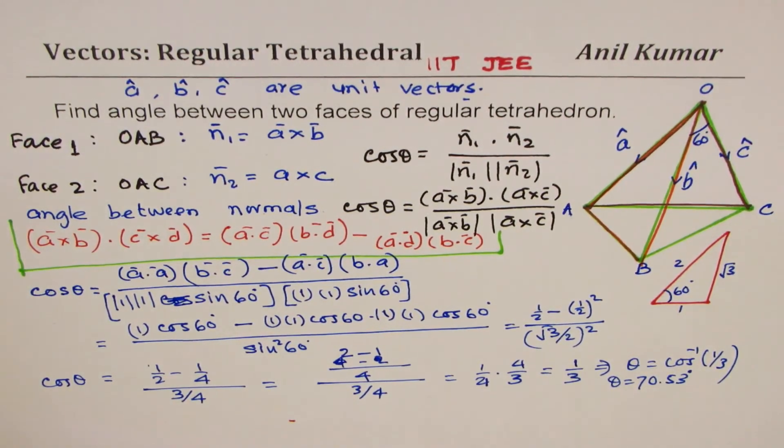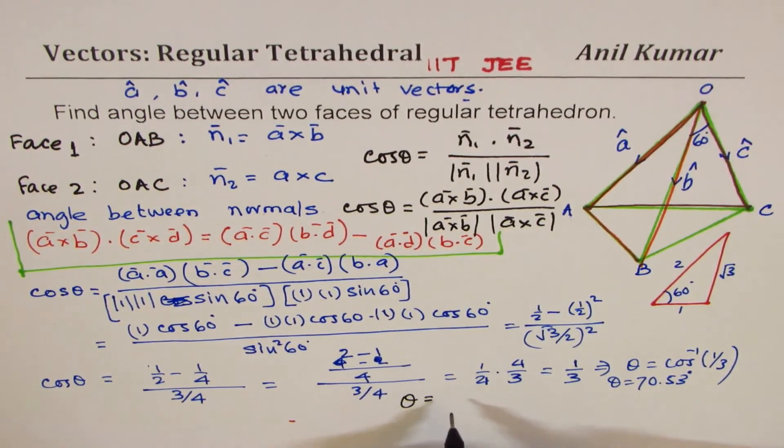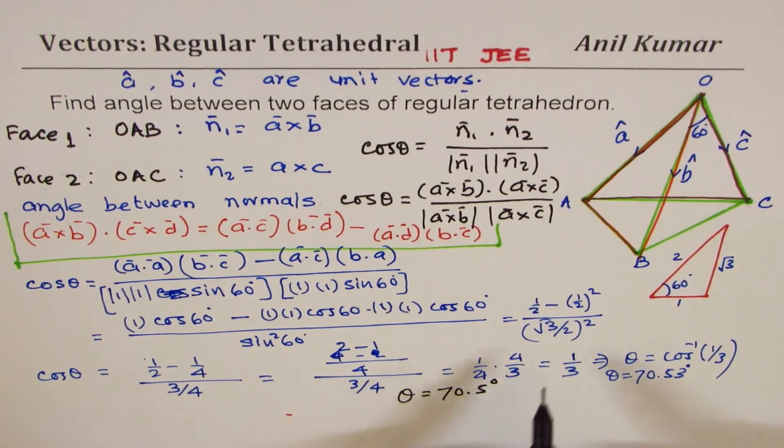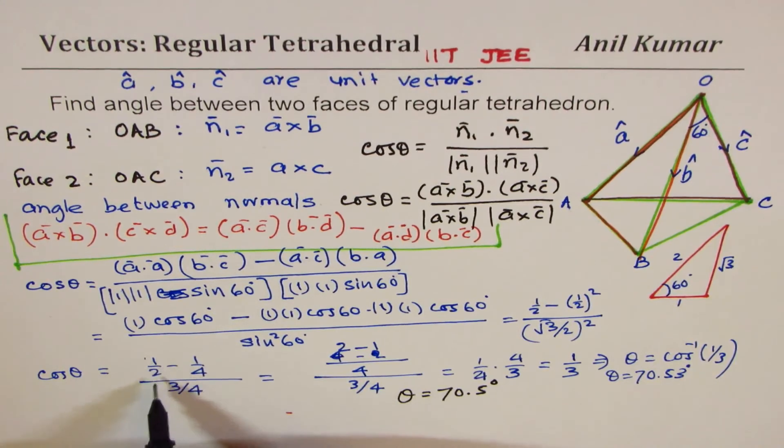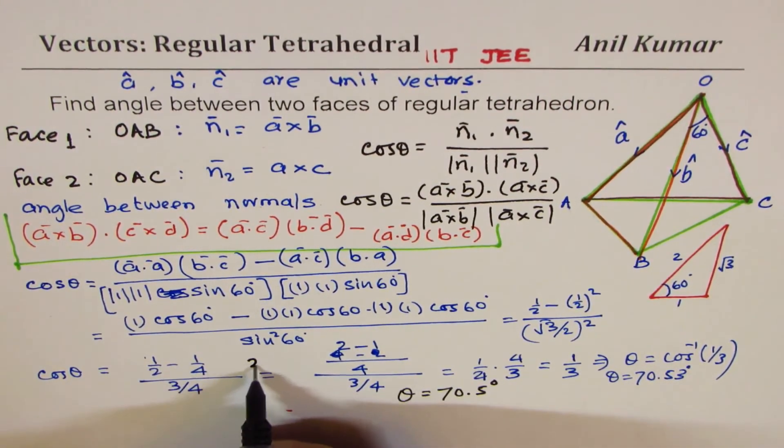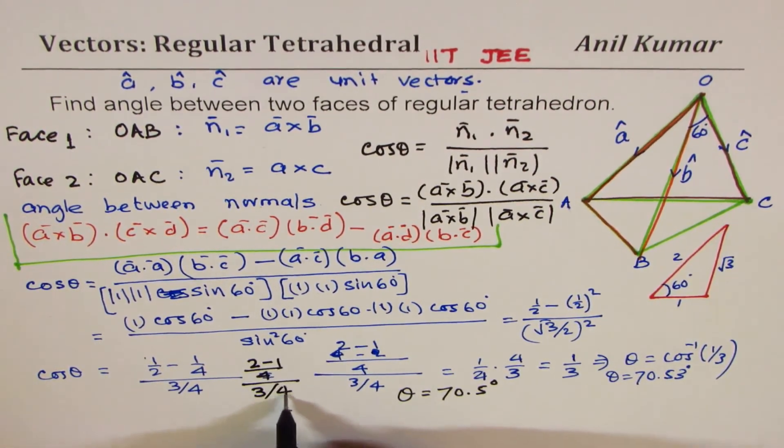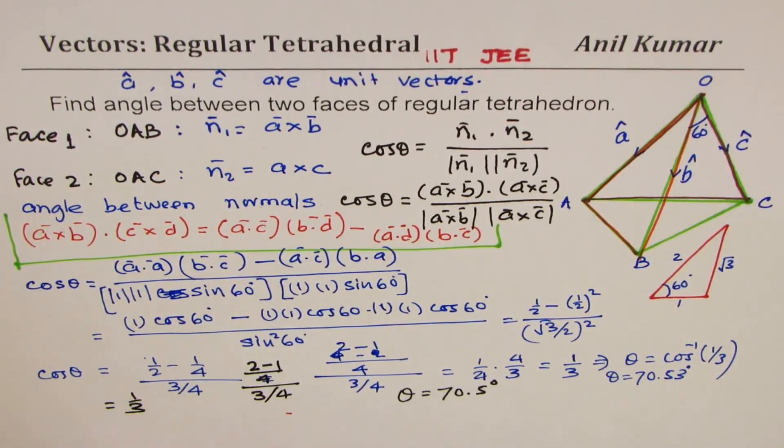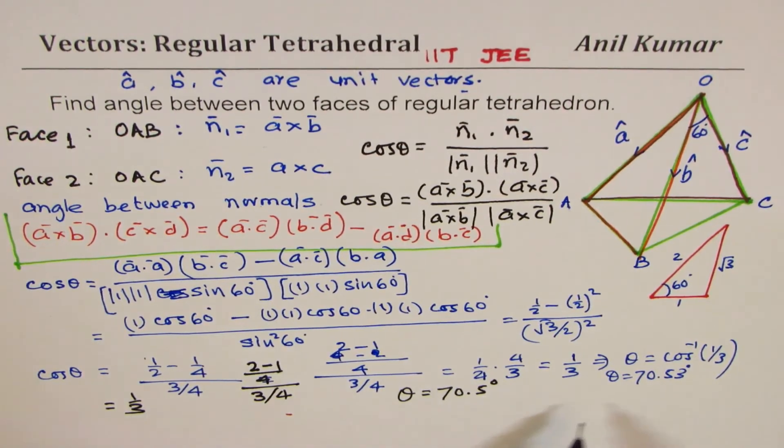So the angle between the faces of a regular tetrahedron is 70.5 degrees. That is how you find it. Half minus 1/4 is 2 minus 1 over 4, divided by 3/4, which equals 1/3. θ is cos inverse of 1/3, which is 70.5 degrees.